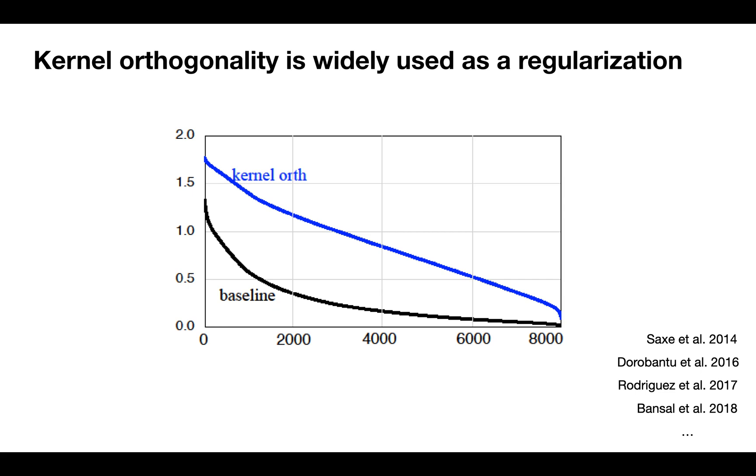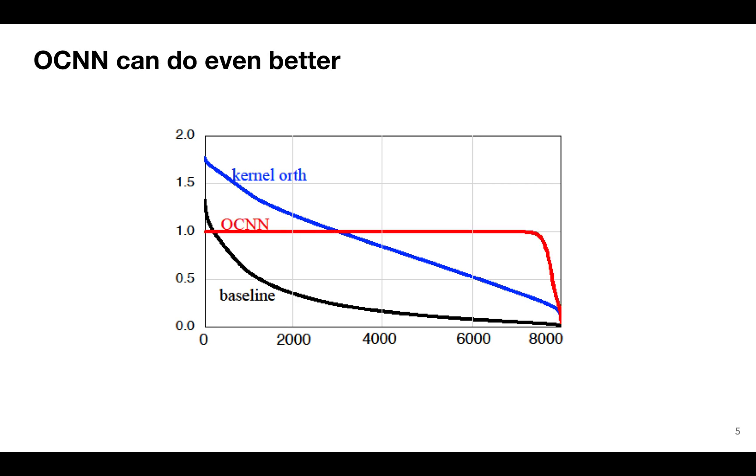Kernel orthogonality was proposed and widely used as a regularization. However, it still doesn't provide uniform spectrum. We propose OCN as an improvement.